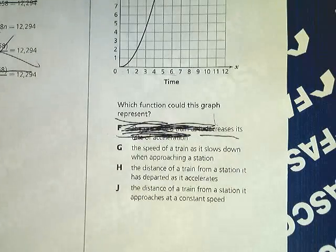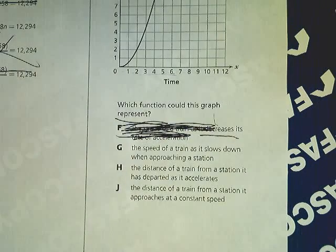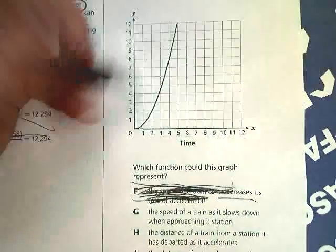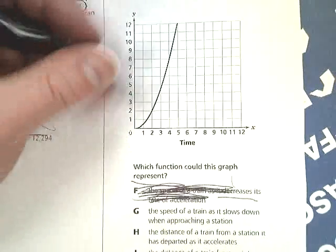For G, the speed of a train as it slows down when approaching a station makes no sense. The numbers are going up over time. The speed would go down if it's slowing down.